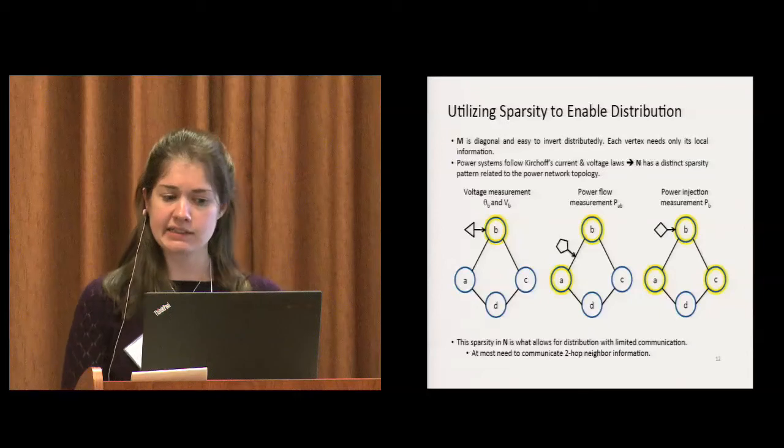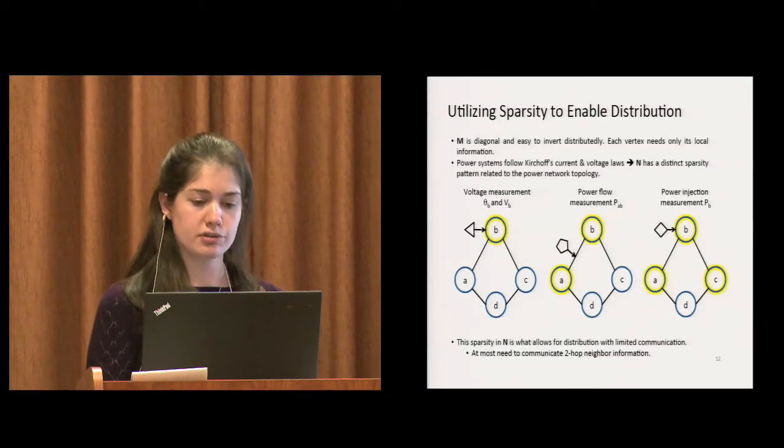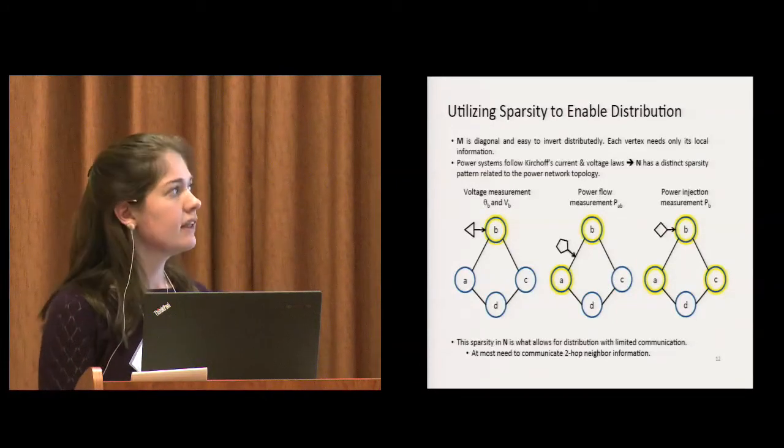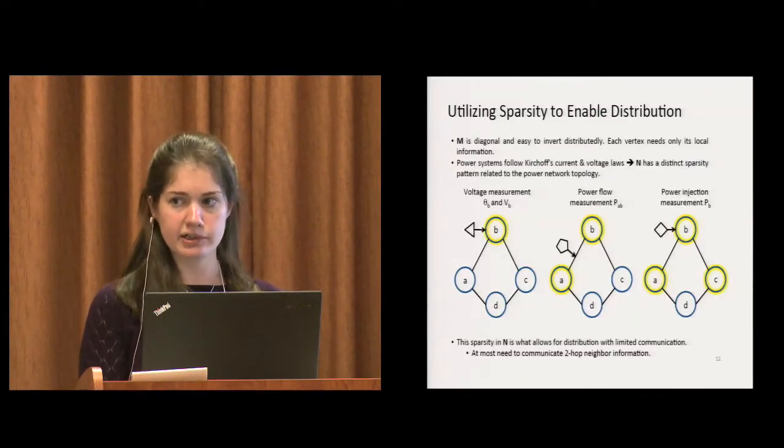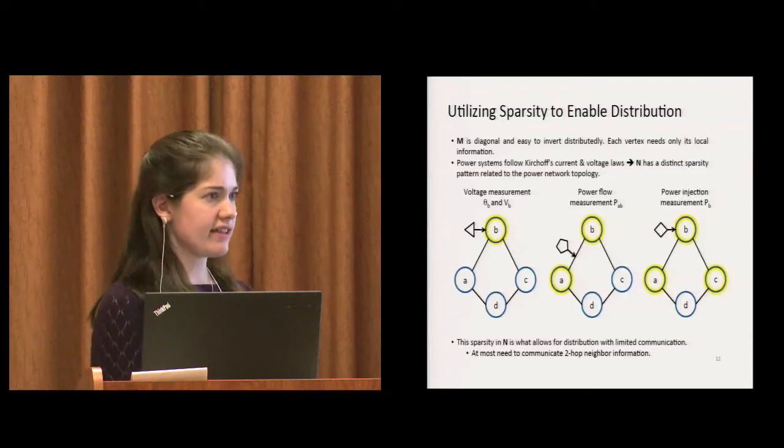So what about N? Power systems, like any electrical circuit, follow Kirchhoff's current and voltage laws. This leads to N having a sparsity pattern that's related to the underlying power network connectivity. To give you insight on why that is, here's a toy model.